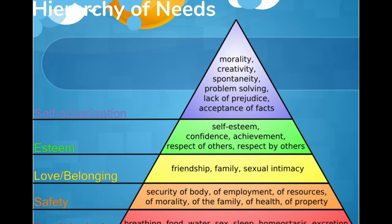Starting at the bottom of the hierarchy, that's our physiological needs. Maslow said we need to make sure our physiological needs are seen to first. So we need to be able to breathe, eat, drink, reproduce, maintain homeostasis, excrete bodily waste, and sleep. Those are our physiological base needs, and we need to satisfy those before anything else.